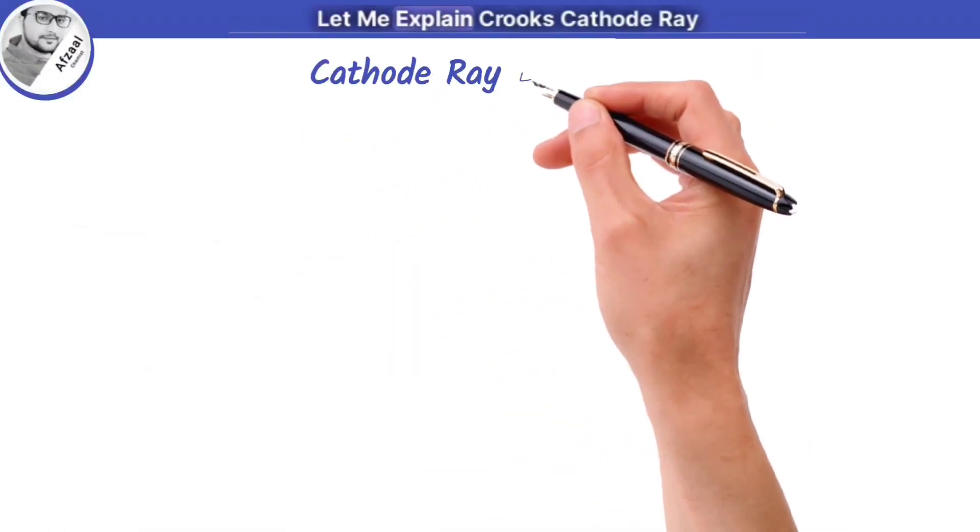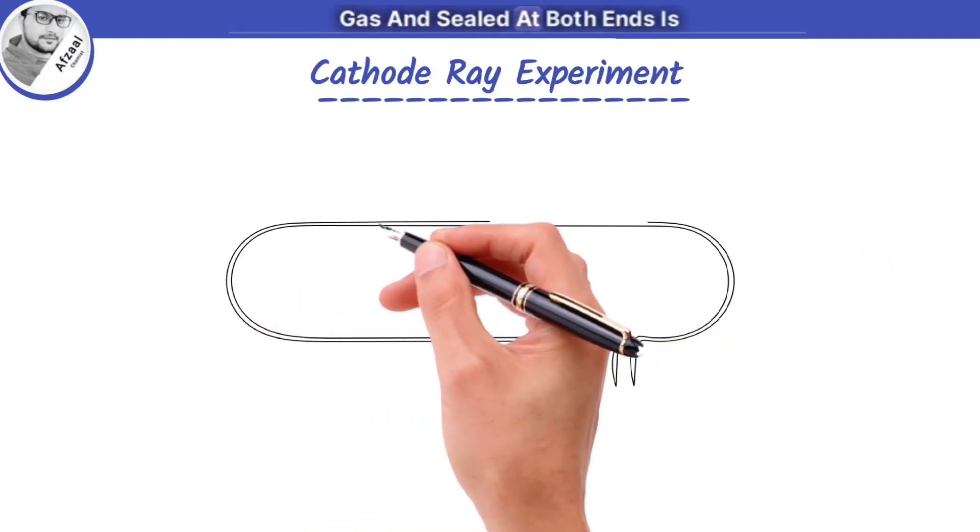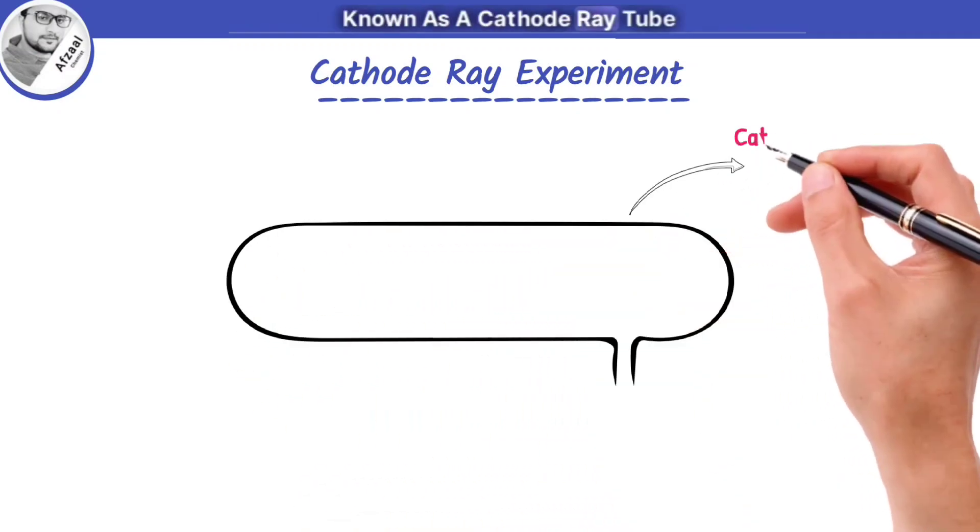Let me explain Crookes' cathode ray experiment. He took a glass tube filled with gas and sealed at both ends, known as a cathode ray tube.